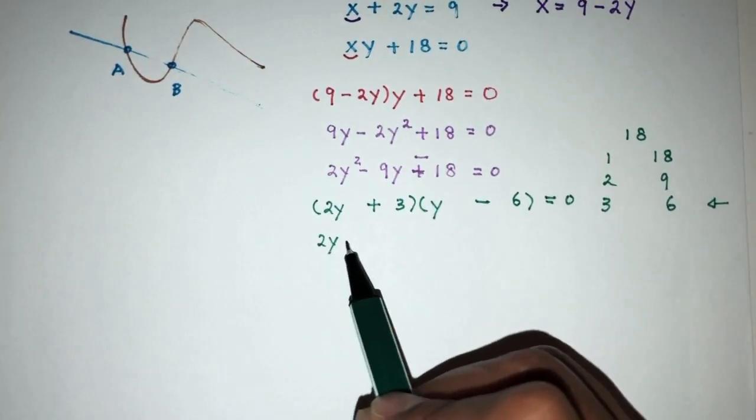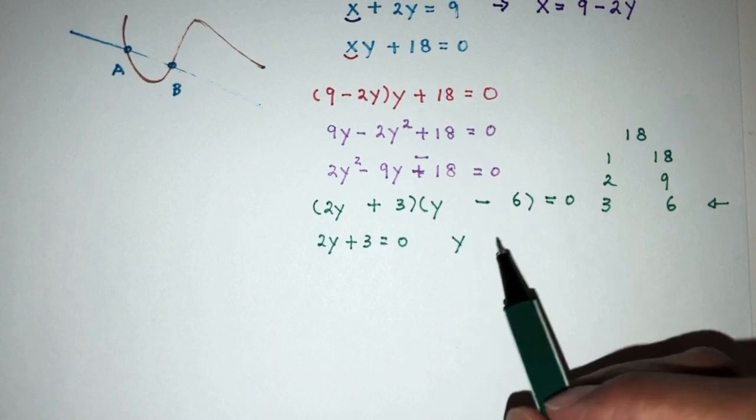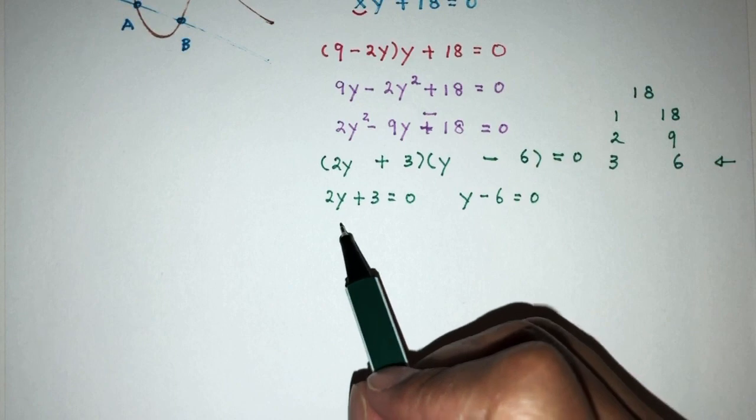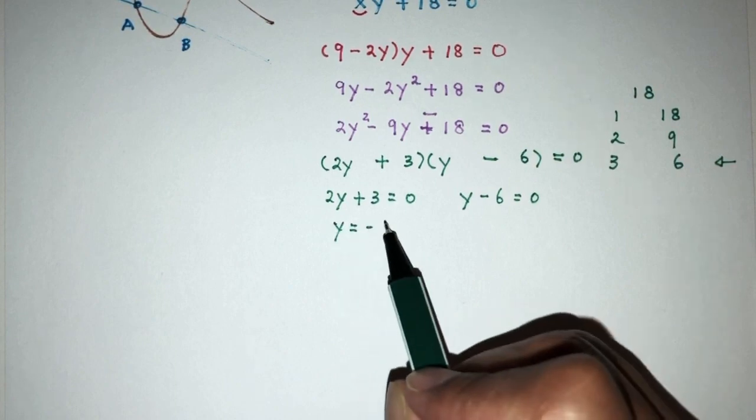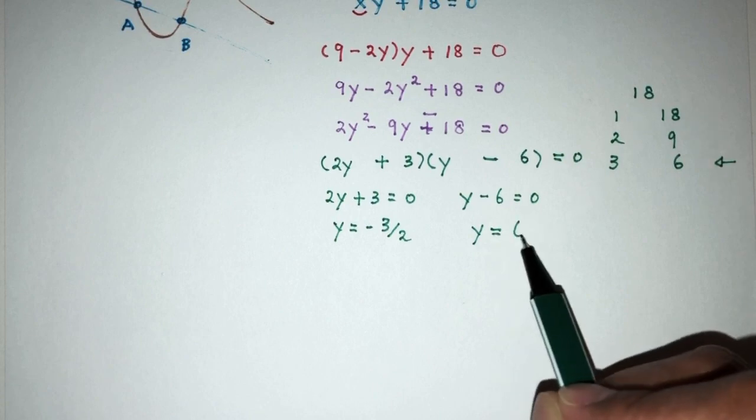So, here solving 2y plus 3 is equal to 0, y minus 6 will be 0. So, here we have y is equal to minus 3 over 2 and y is equal to value of 6.